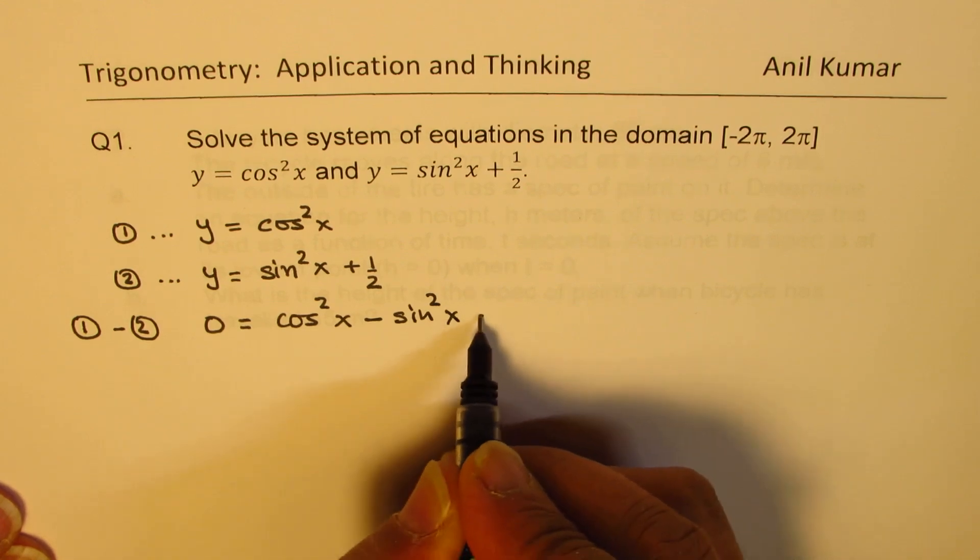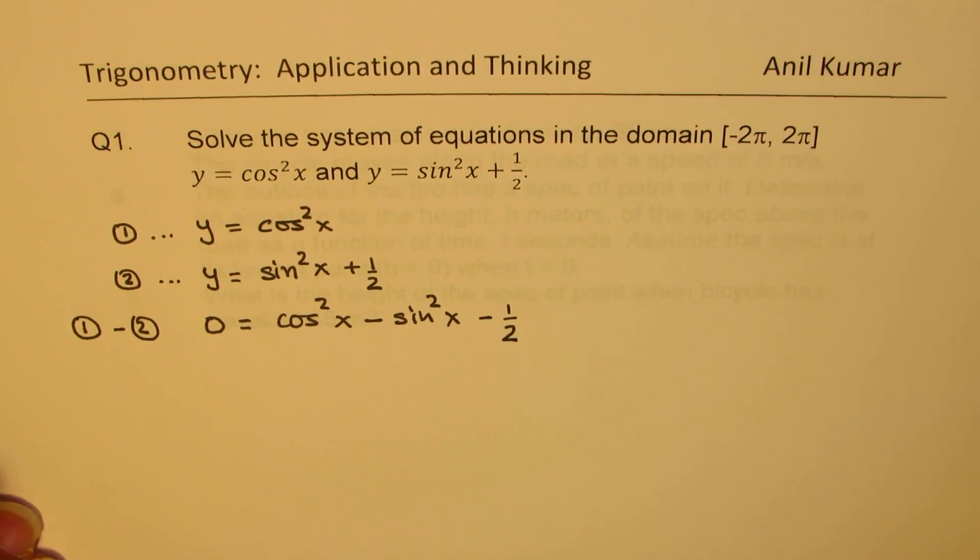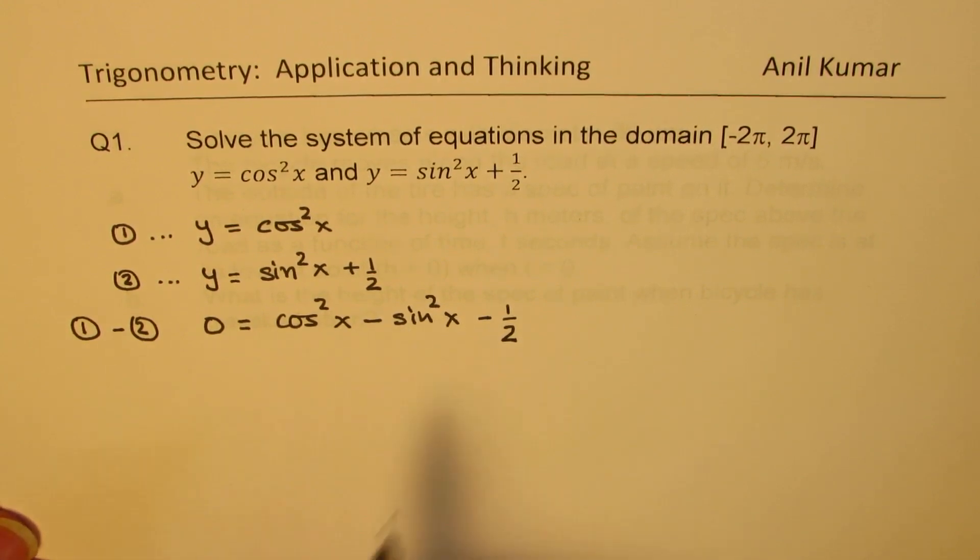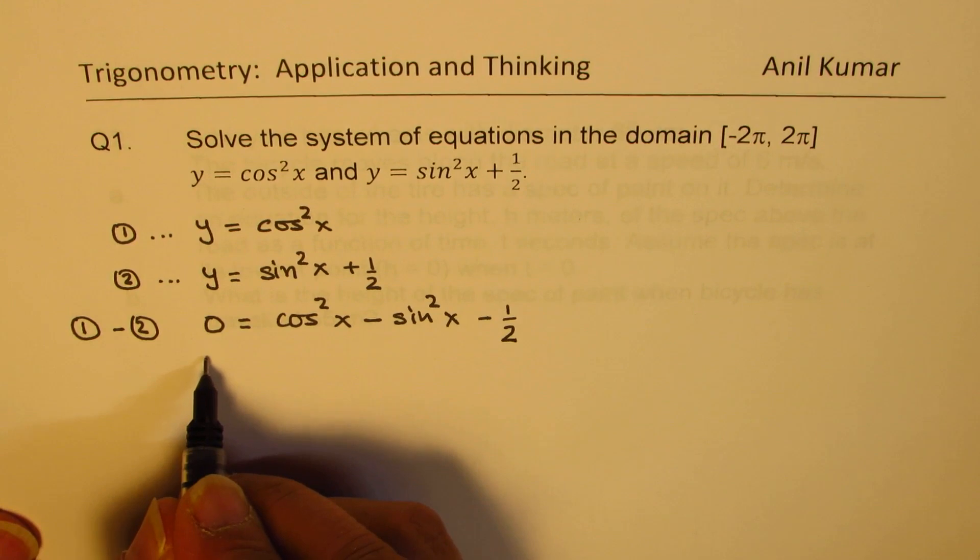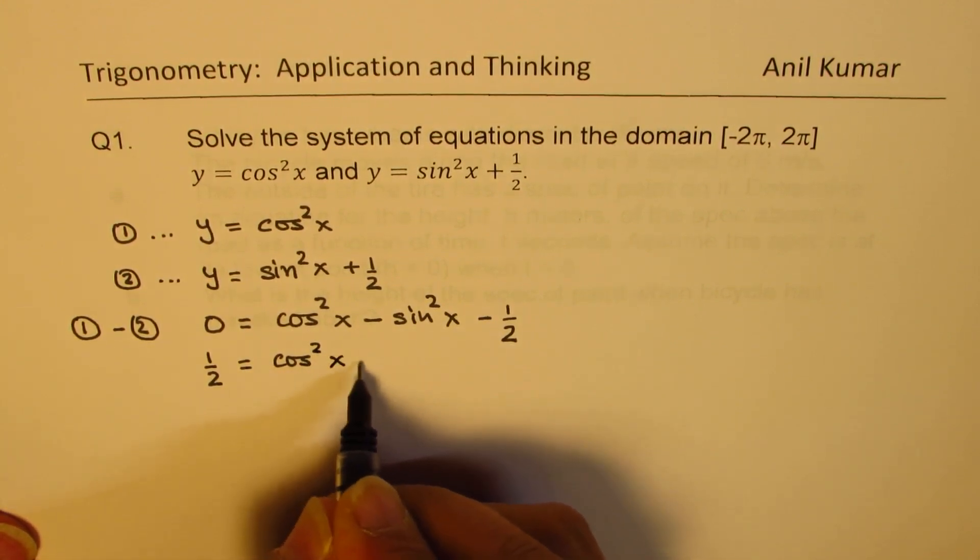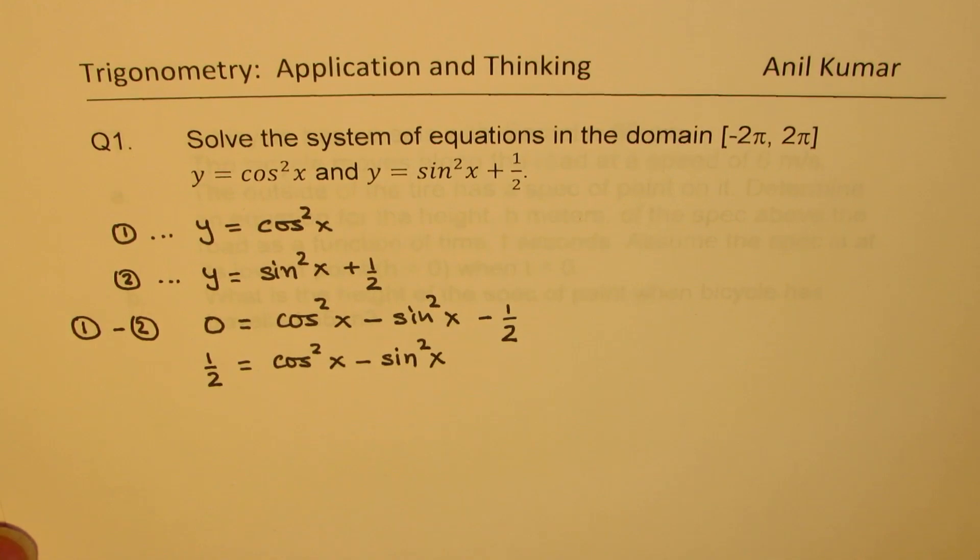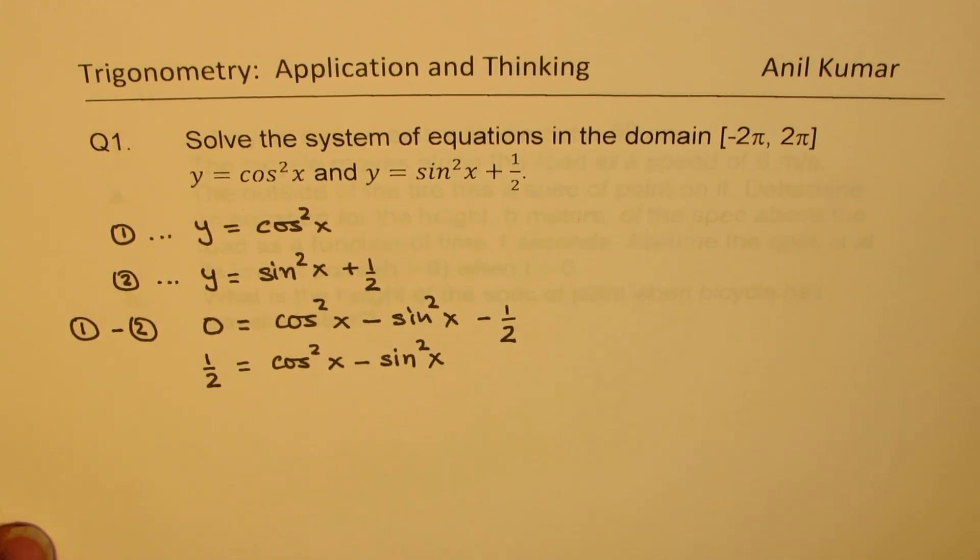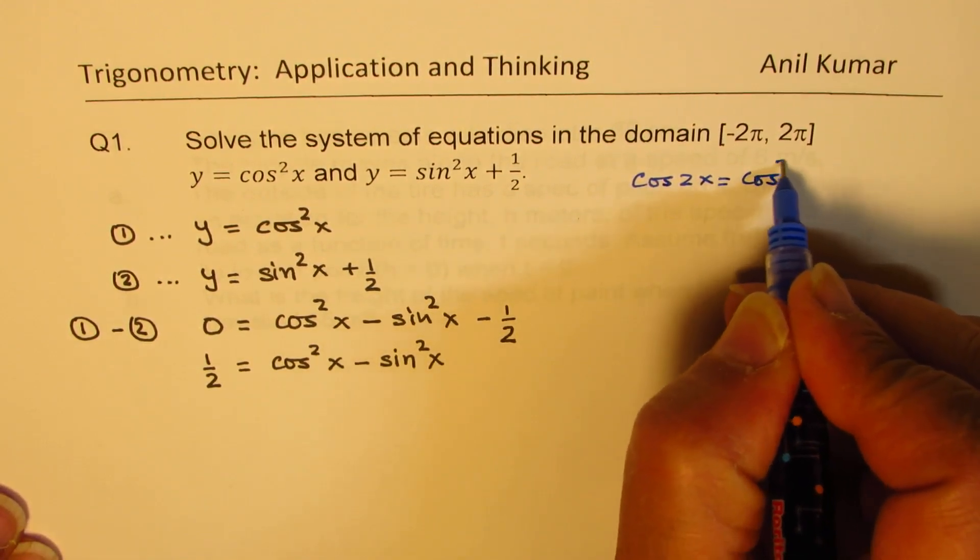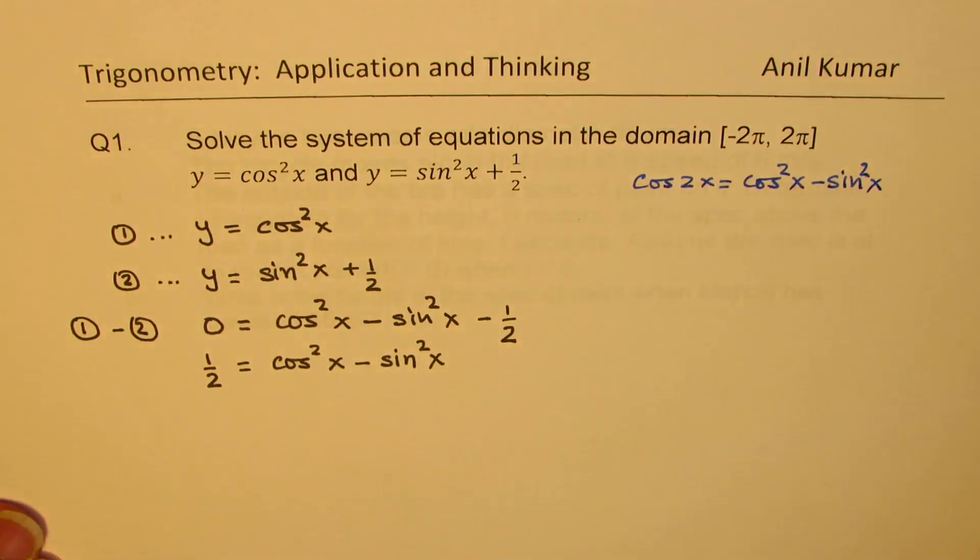Now we know an identity which relates cos squared x and sine squared x. I'm going to take minus half to the left side, so I'll write this as half equals cos squared x minus sine squared x. I hope you remember the identity of cos 2x. Cos 2x is basically cos squared x minus sine squared x, so we are going to use this identity here.